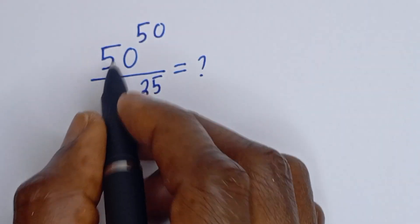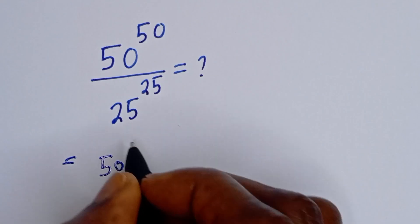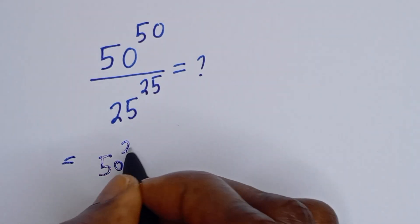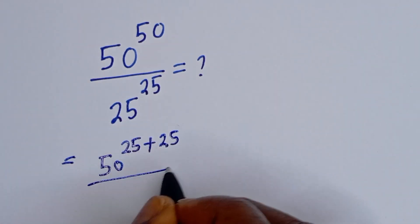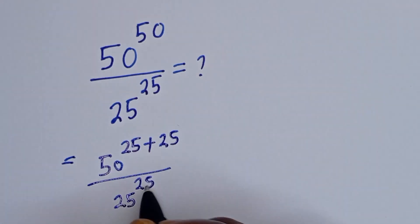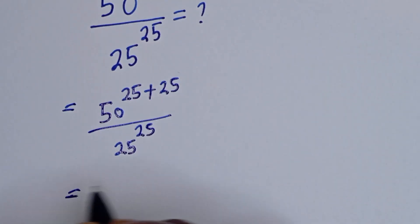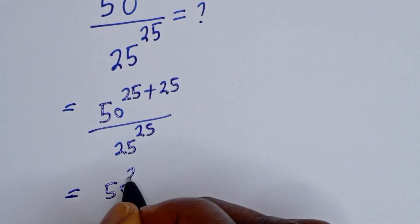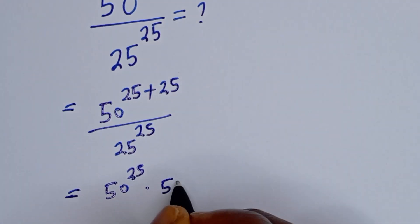This can be written as 50 to the power of 25 plus 25, over 25 to the power of 25. Then this is equal to 50 to the power of 25 multiplied by 50 to the power of 25, divided by 25 to the power of 25.